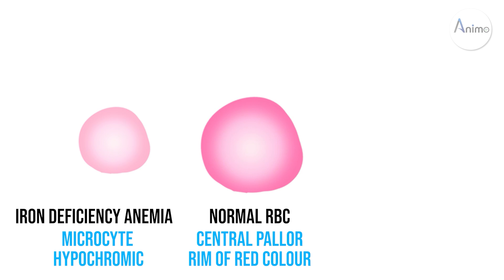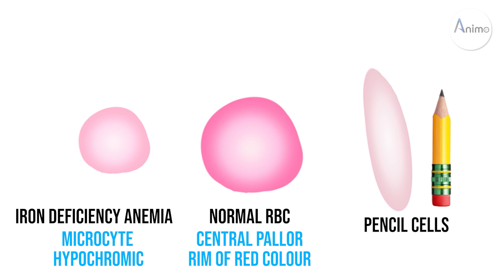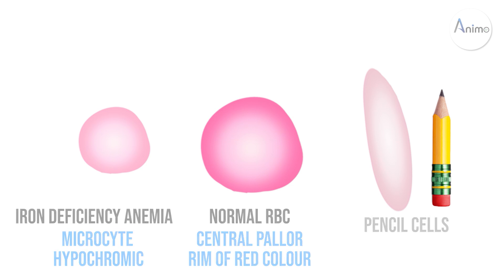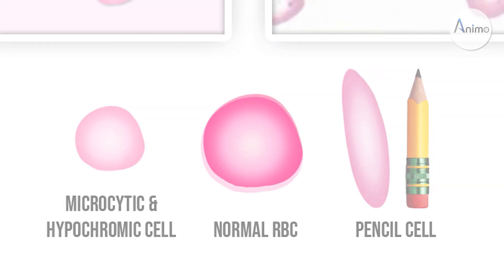There are also considerable changes in the shape of the RBC — some look elongated and some look pencil-like, so we call these cells pencil cells.